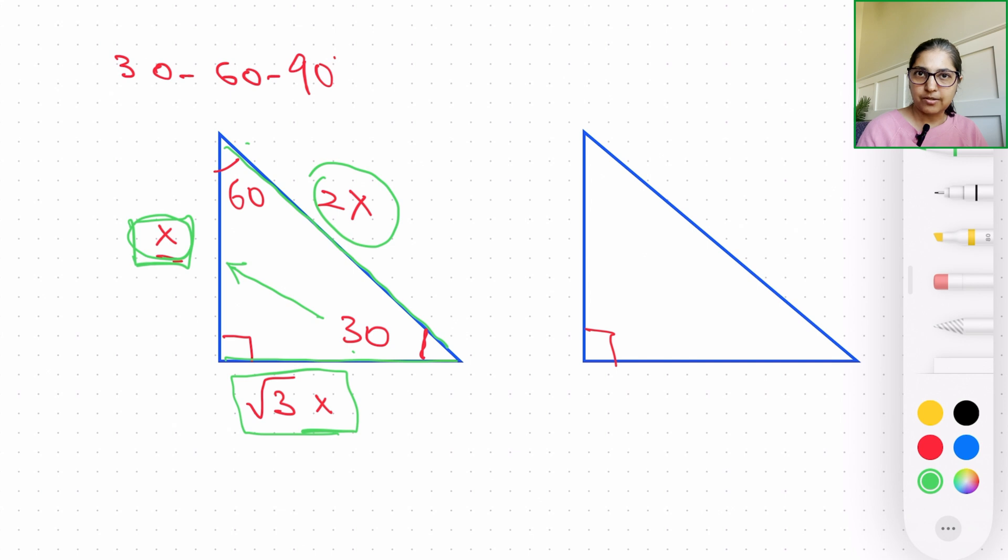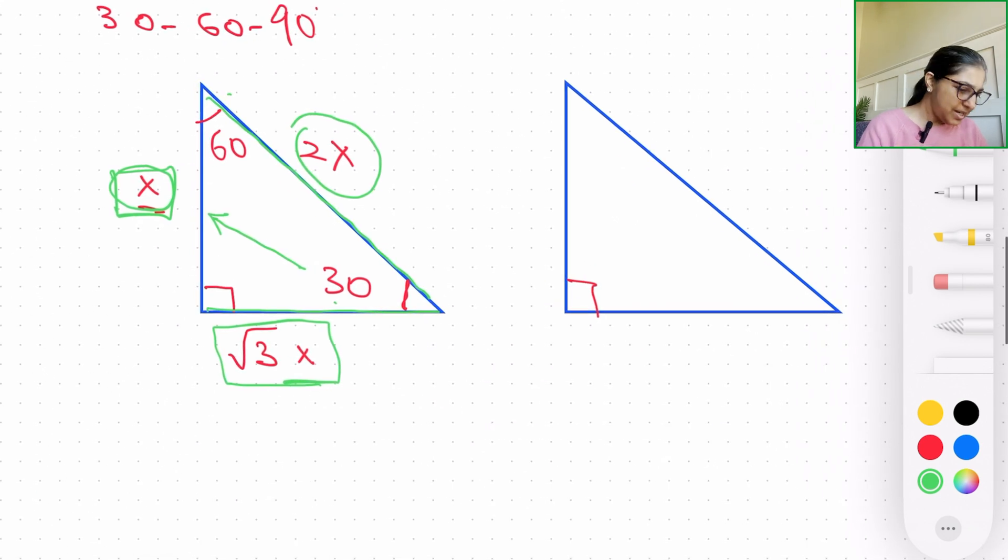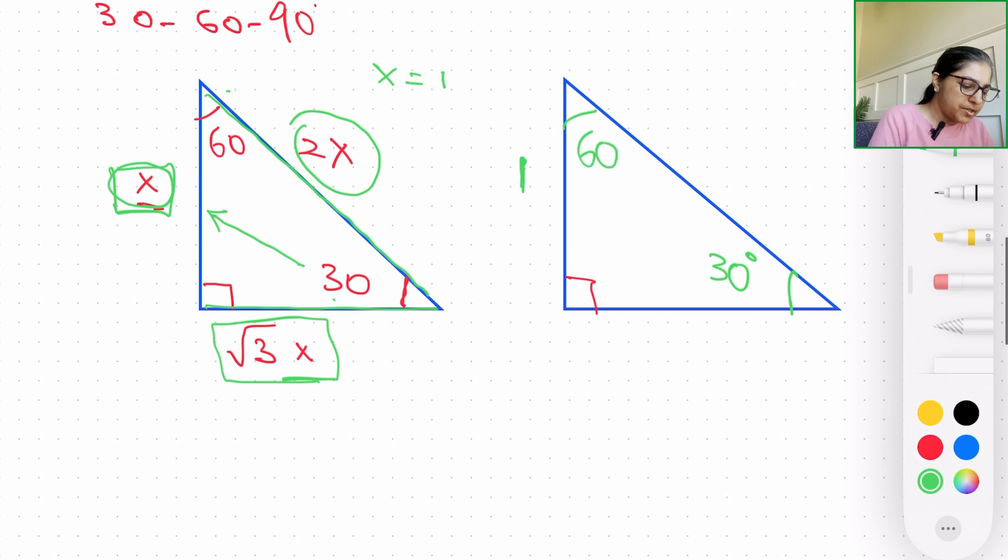Now let's take some example. Let's take x = 1. If x is 1, this becomes 1, given the fact that we have 30° here and 60° on the opposite side. So this is √3 × 1, and 2 × 1 is going to be 2.